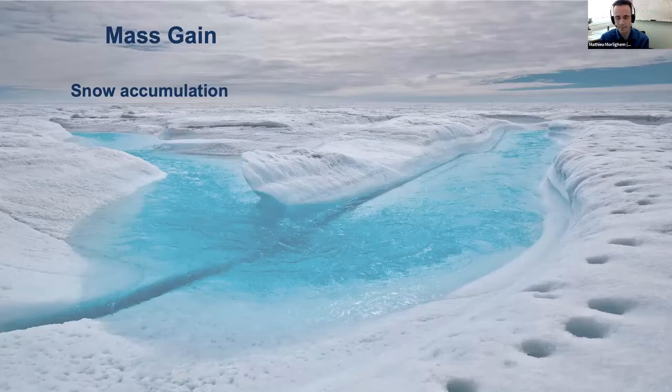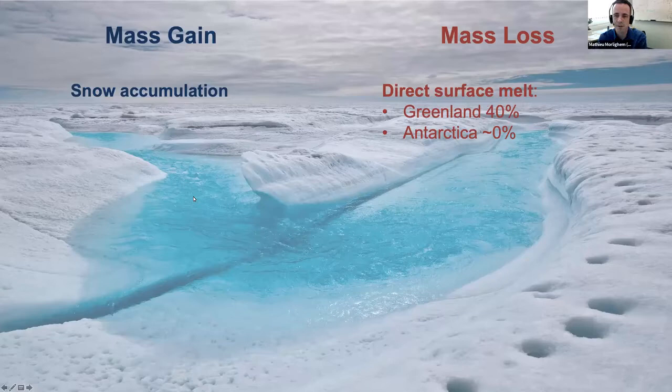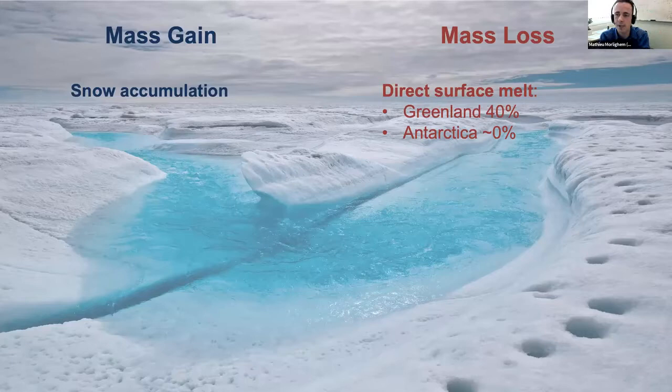What comes in is snow accumulation — ice sheets are formed by the slow transformation of snow into ice. What comes out happens through three different processes. The first is direct surface melt. You can see a picture from Greenland showing a river at the surface. That represents about 40% of the mass loss of Greenland — not net loss, but every year, if 100% comes in through snow accumulation, 40% leaves through direct surface melt. In Antarctica, it's so cold there is hardly any melt, maybe a little bit in the peninsula or on ice shelves.